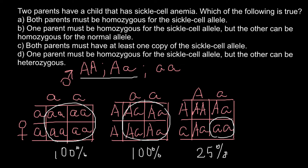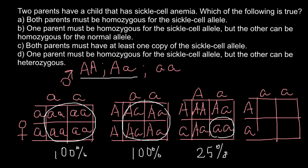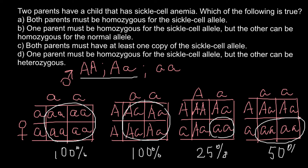Now let's check answer D: one parent must be homozygous for the sickle cell allele, but the other can be heterozygous. From this cross, we get two heterozygous genotypes and two homozygous recessive genotypes, so 50% of the progeny would express this genetic disorder.